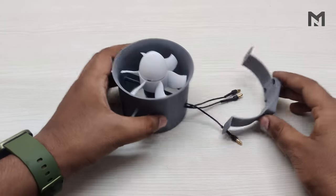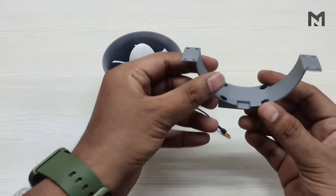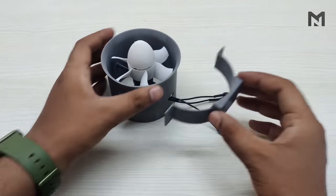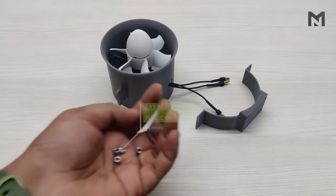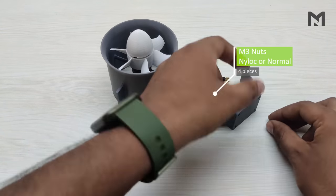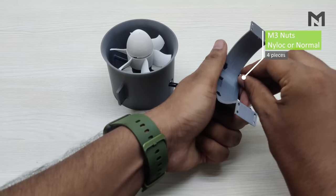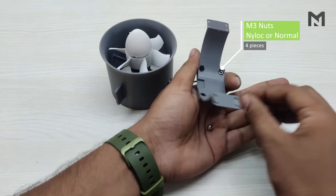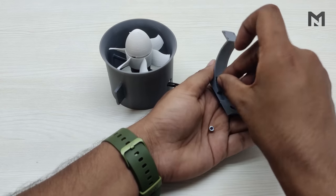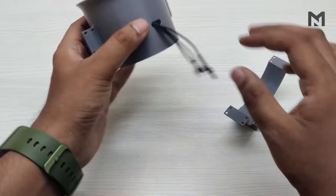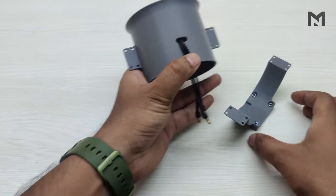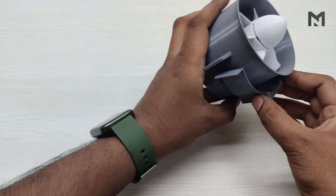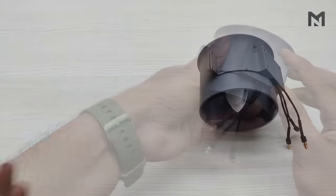Before attaching the EDF to the test rig, I will mount this attachment to the EDF. First take four M3 diameter nuts and insert them into the attachment's groove. These nuts will help in attaching the EDF to the test rig. Now wind the motor wires together and place the EDF above the attachment.